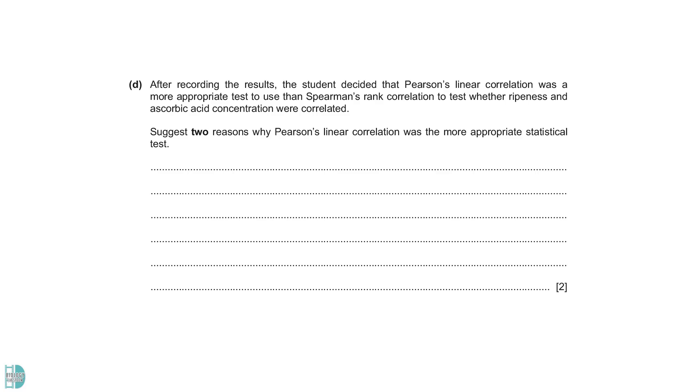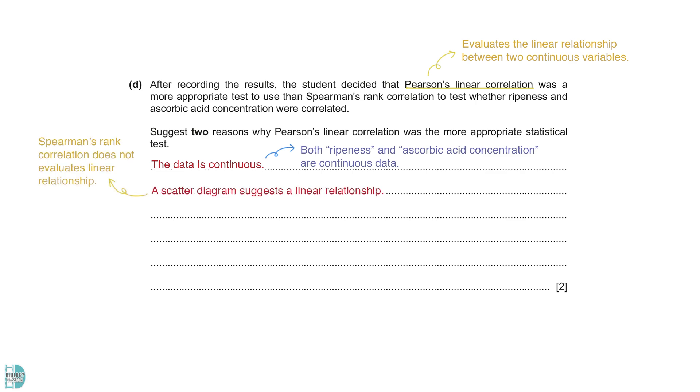Part DE wants you to suggest why Pearson's Linear Correlation was the more appropriate statistical test for this investigation. Pearson's Linear Correlation evaluates the linear relationship between two continuous variables. In this study, the independent and dependent variables are both continuous data. When the results are used to plot a scattergram, it suggests a possible linear relationship. Pearson's correlation can evaluate if the correlation is linear, while Spearman's rank correlation does not have this function. Lastly, this test is used when the data is normally distributed.